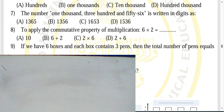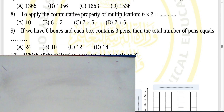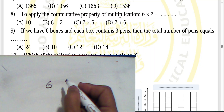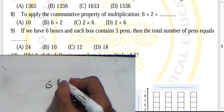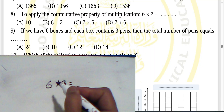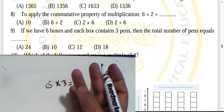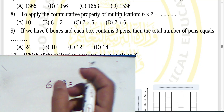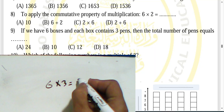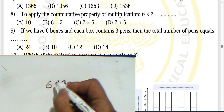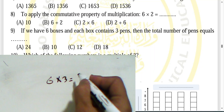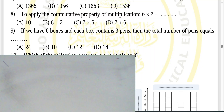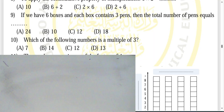Question nine: if we have six boxes and each box contains three pins, the total is six times three, which equals three plus three plus three plus three plus three plus three, giving eighteen — choose letter T.